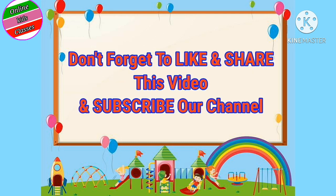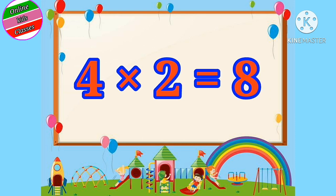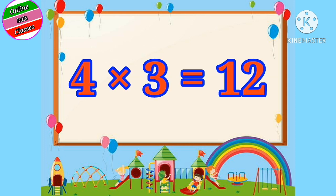Don't forget to like and share. Four ones are four. Four twos are eight. Four threes are twelve.